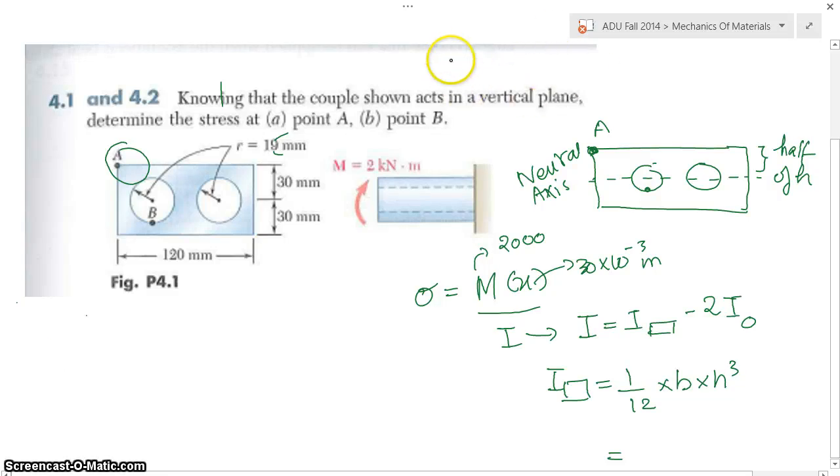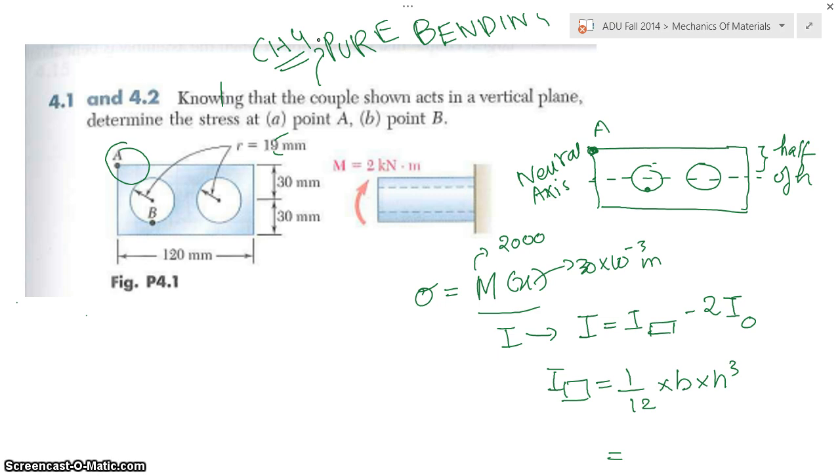Okay, so today we're studying pure bending, which is chapter four. I have some people with me who will be helping us understand this question. As you can see in this question, they gave us a material and they apply a moment over here, it's 2 kN·m. The material has a cross-section with two circles in the middle.